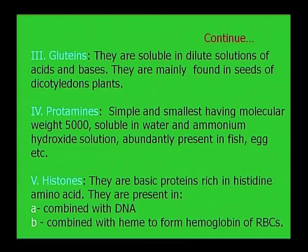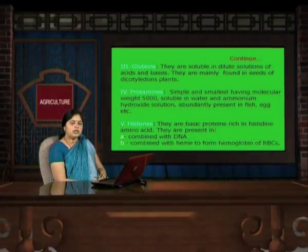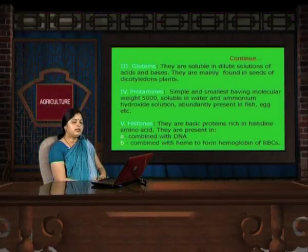Protamines are simple and the smallest proteins, having a molecular weight of about 5000 daltons. They are soluble in water and ammonium hydroxide solution and are abundantly present in fish and egg yolk. Next, histones. These proteins are rich in basic amino acids such as histidine. They are present within the nucleus and combined with DNA to form nucleoproteins and carry out genetic information, or they can combine with heme to form hemoglobin of red blood corpuscles.